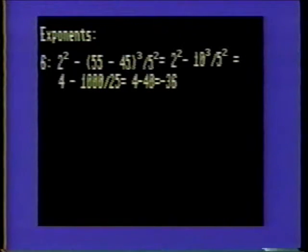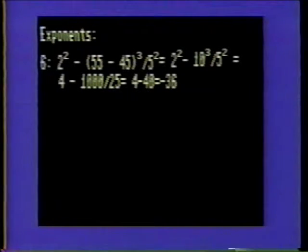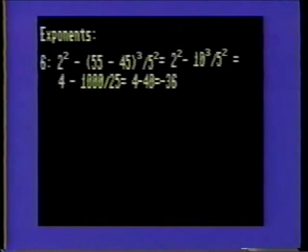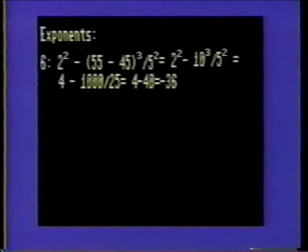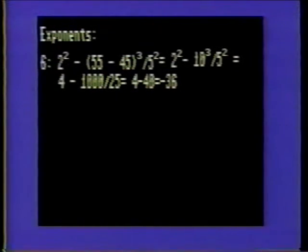Problem 6 is very much like its predecessor, number 5, except it contains another level of difficulty. As before, solve for the part inside the parenthesis first. Thus, 55 minus 45 is 10. Now the equation reads 2 squared minus 10 cubed divided by 5 squared. Then, starting from left to right, solve for the remaining exponents: 2 squared is 4, 10 cubed is 1,000, and 5 squared is 25. Thus, the remaining equation is 4 minus 1,000 divided by 25. Divide 1,000 by 25 to get 40. The resulting equation is 4 minus 40. Subtracting the remaining numbers yields negative 36.